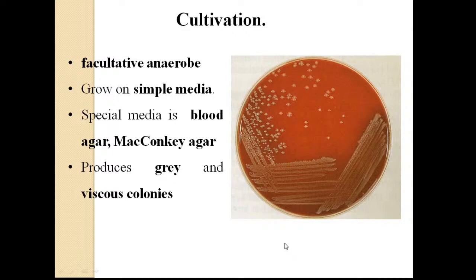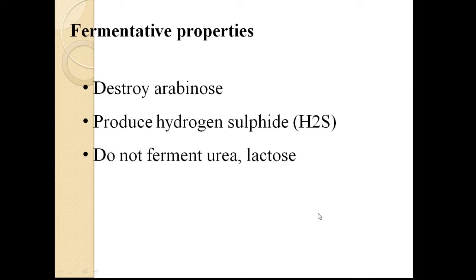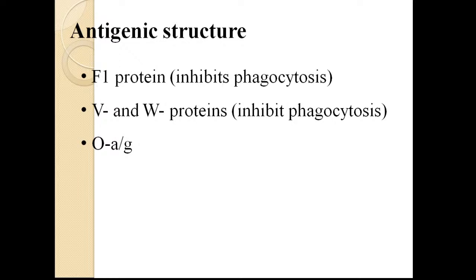Regarding cultural properties, Yersinia pestis is a facultative anaerobe like other enterobacteria and can grow on simple media like meat-peptone agar, as well as special media such as blood agar and MacConkey agar. Yersinia produces gray, viscous, spherical colonies on agar. Fermentative properties used for identification include: destruction of arabinose, production of hydrogen sulfide, and it does not ferment urea or lactose. Therefore, colonies are colorless and the color of the medium is unchanged.